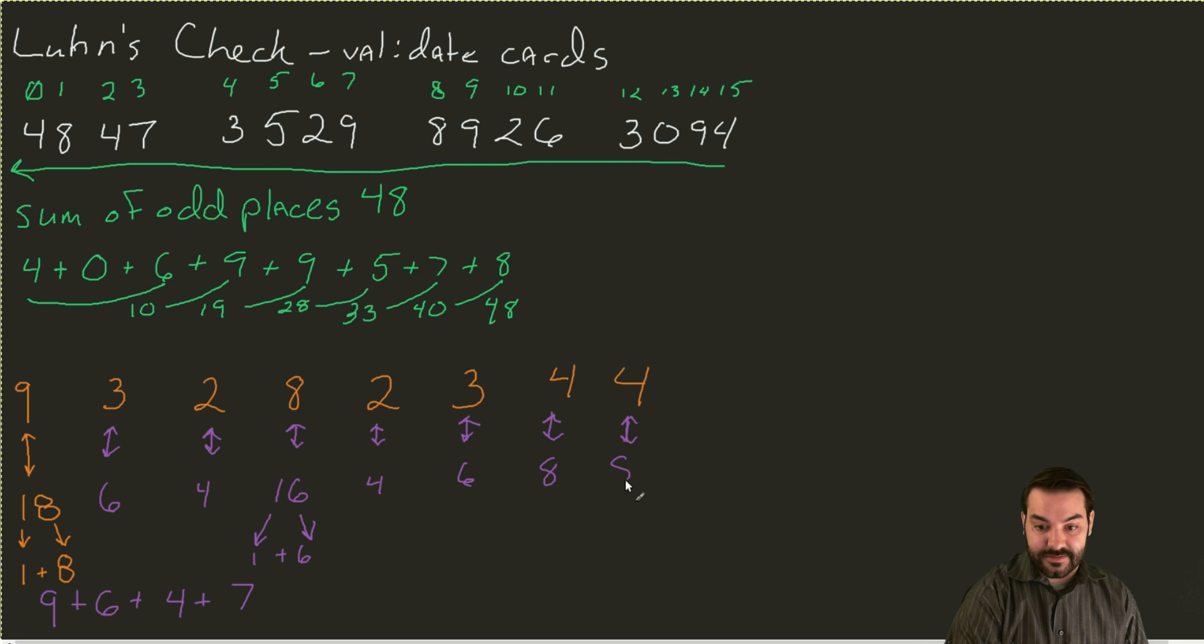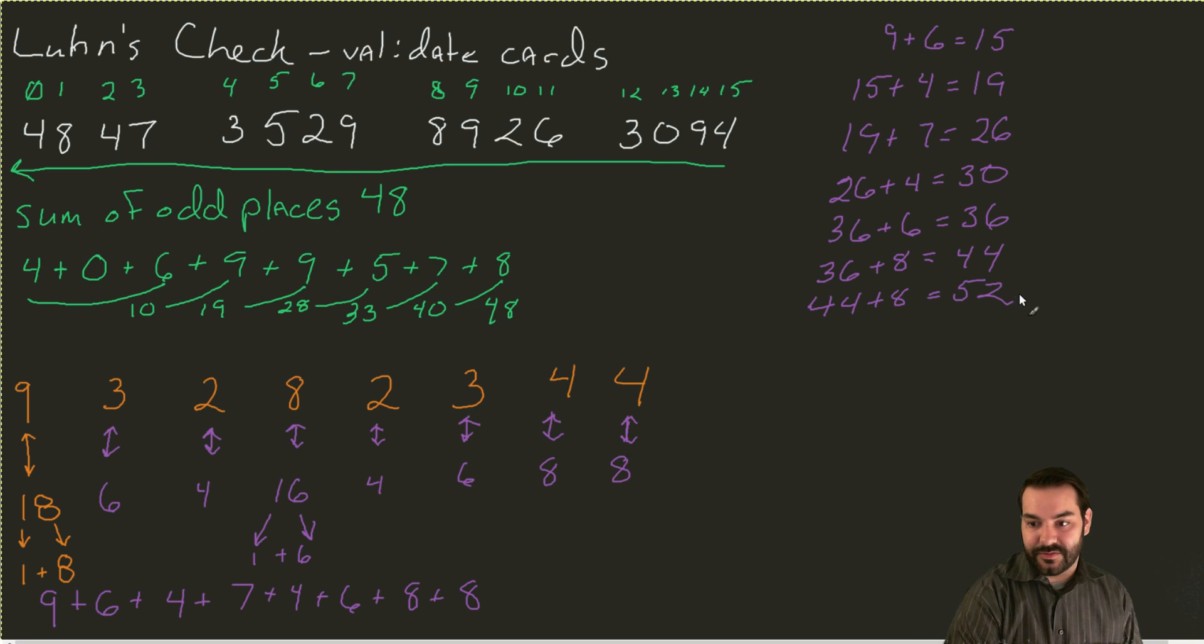Luckily, all 4 of these numbers can get doubled without having to run through that second part. So, 4, 6, 8, 8. If I take those numbers, 9 plus 6, that produces 15. 15 plus 4, that produces 19. 19 plus 7, that's 26. 26 plus 4 equals 30. 30 plus 6 equals 36. 36 plus 8 is going to equal 44. And 44 plus 8 equals 52.